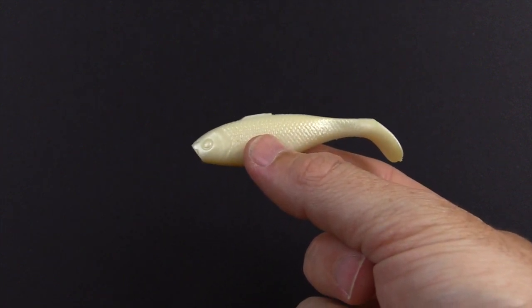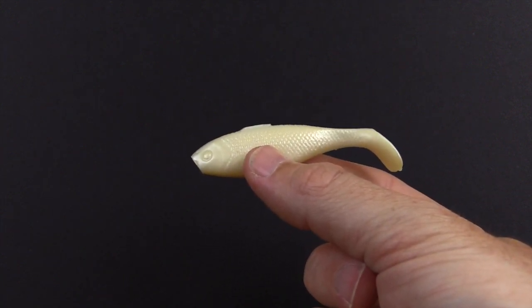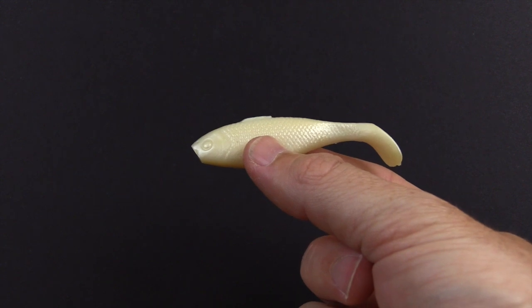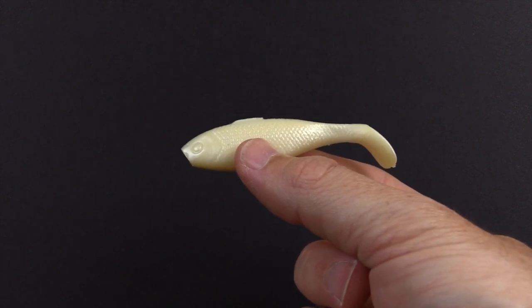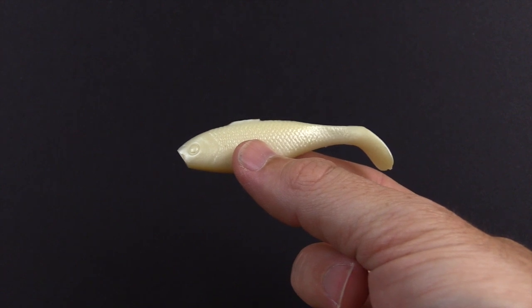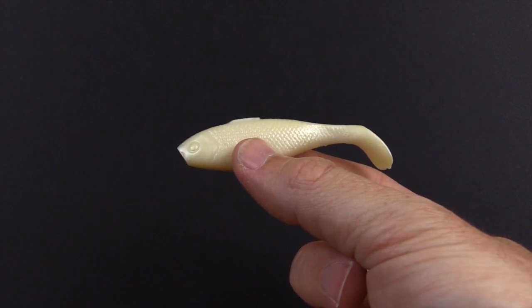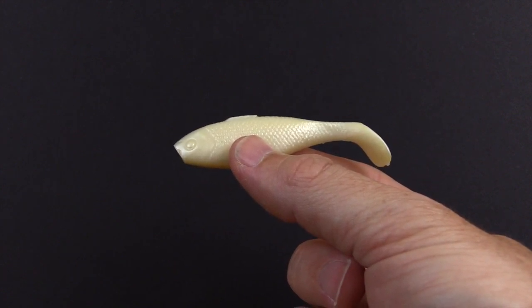In this video, you're going to learn how to rig a gulp pogey. This is a three inch gulp pogey in white color. What this is good for is catching snook, redfish, trout, flounder, and really any other fish that feed on two to four inch bait fish.